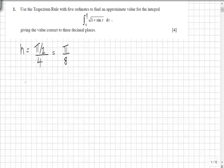So each of our individual x values are going to be x₀ = 0, x₁ = π/8, x₂ will be 2π/8 which is π/4, x₃ will be 3π/8, and x₄ will be 4π/8, which is π/2, the upper limit of the integral.